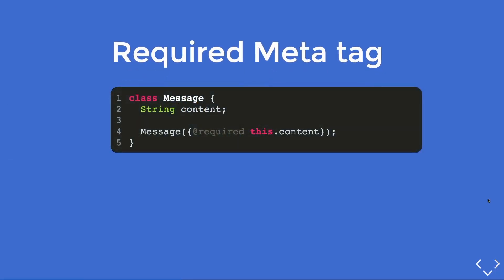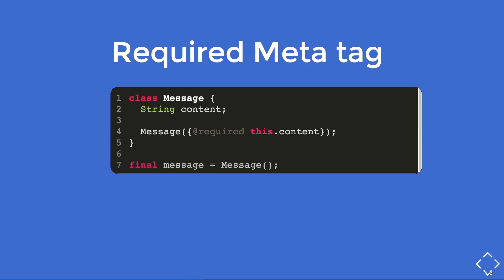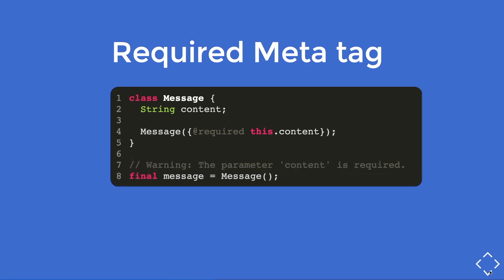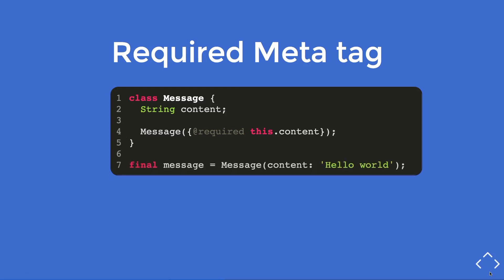So what is the required meta tag? Using a Message class example with a content property, you add the @required annotation to the parameter. If you create a Message without any content, a warning appears saying 'the parameter content is required.' Once you provide a value like 'hello world', the warning disappears. This is really helpful when an object needs certain data before being used.